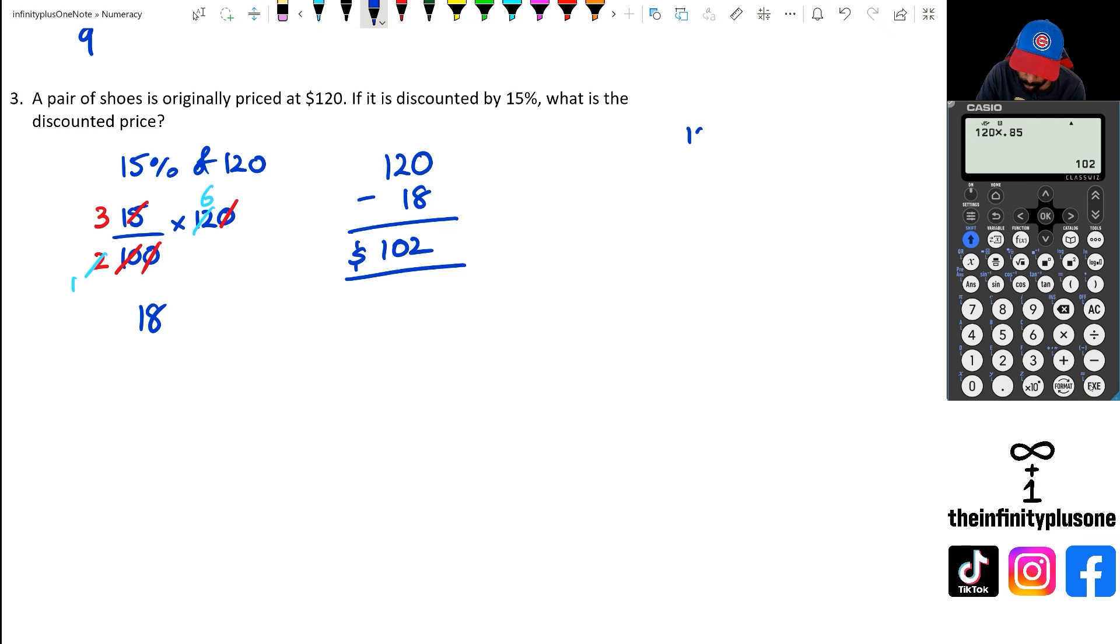And if you want to know how I got that 0.85, I've got 100%. I'm taking away 15%, which means I'm left over with 85%. And 85% as a decimal is 0.85. And that's how you do it. So as you can see, folks, multiple ways of actually doing this when it comes to percentage decrease, pick the one that works for you.